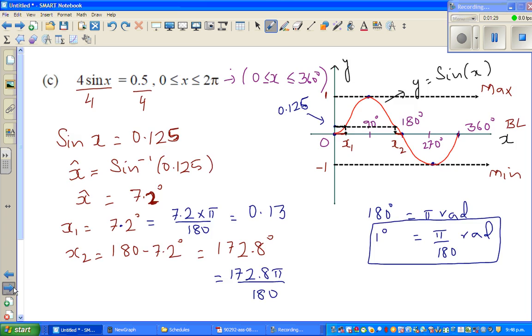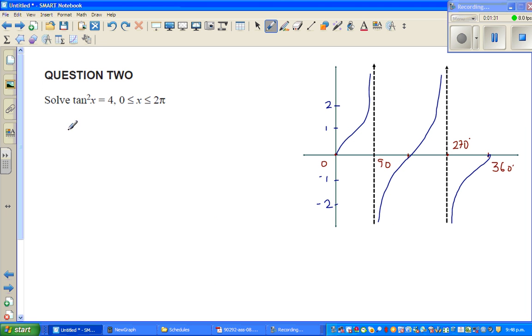Tan squared x is 4 and you want to find x between 0 and 2π. As I usually do, I like to think in degrees. I have first drawn the tan graph. Taking square root of both sides, square root of tan squared x equals square root of 4. Now this is where most of you can do wrong. What is square root of 4? Square root of 4 is not only 2, by default it is 2, but the complete truth is plus or minus 2.